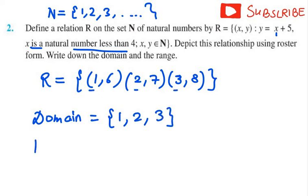Now, we need to write the range as well. Range is the second elements of the ordered pair. It will be the second element: 6, 7, and 8.